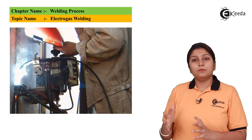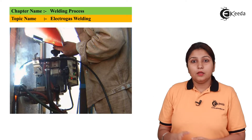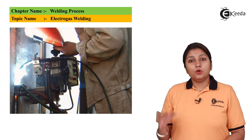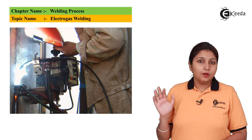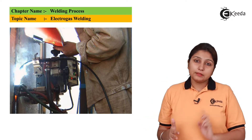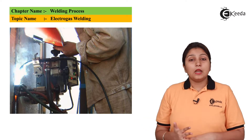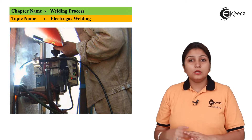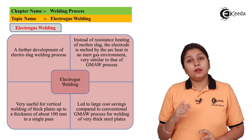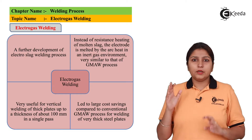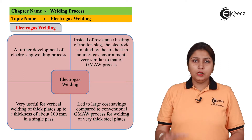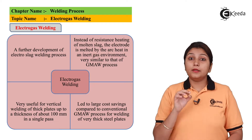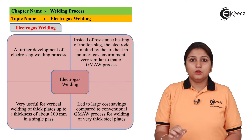In this diagram, you can see that electro gas welding takes place. It is also taking place in a vertical direction. Unlike molten slag, it is using gas. In electro gas welding, the arrangement is vertical, welding takes place, and inert gas is used for welding.